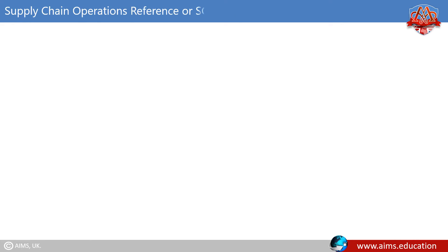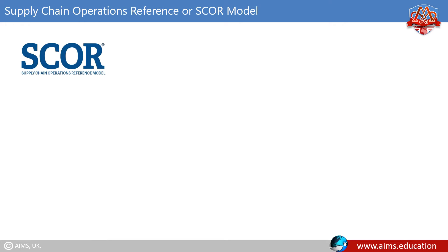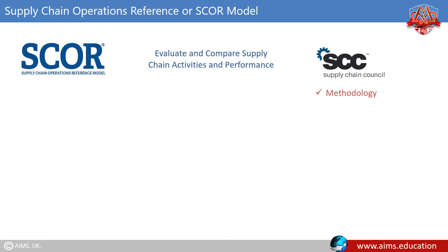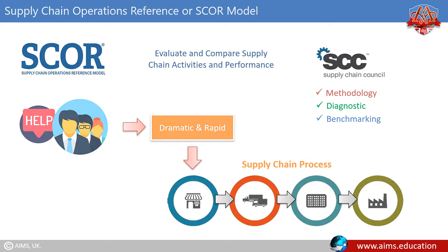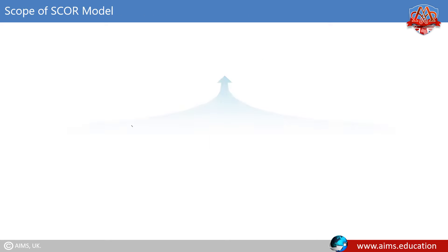The Supply Chain Operations Reference, or SCOR model, is a process reference model established to evaluate and compare supply chain activities and performance. SCOR is the product of the Supply Chain Council, and its methodology, diagnostic, and benchmarking tools help organizations make dramatic and rapid improvements in supply chain processes.